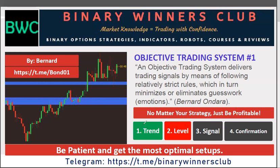There are four components to this trading system. Number one: following the trend. Number two: trading from key levels. Number three: a signal and confirmation of that signal. Once you have rules one, two, three, and four — place your trade, then wait for the results.